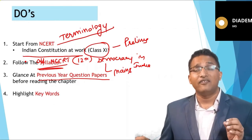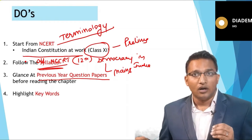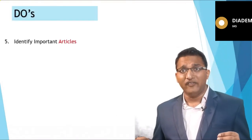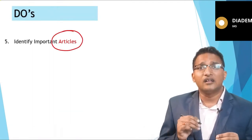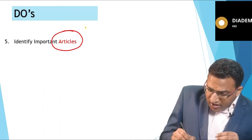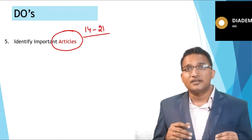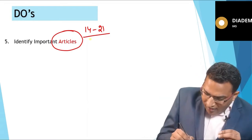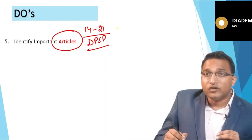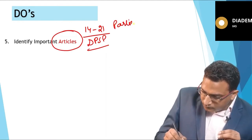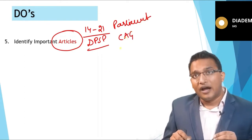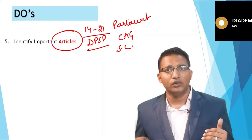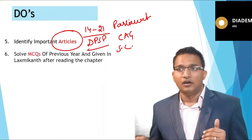Highlight keywords when reading anything — that will help at the time of revision and develop familiarity with the book. Then identify important articles. In polity you will find articles from the Constitution, and there are important ones you can't miss — for example, Article 14 to Article 21 for fundamental rights, articles related to DPSP, Parliament, CAG, and Supreme Court. You should know the article numbers for areas asked frequently in the examination, but you are not supposed to remember each and every article.